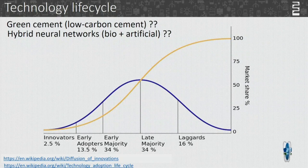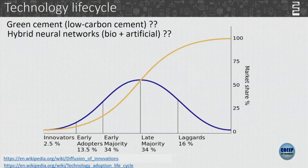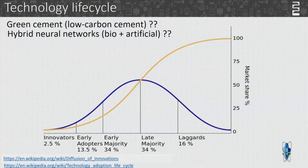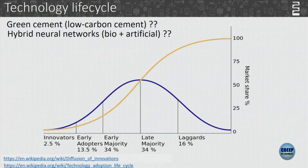Green cement is a low-carbon cement that uses more recycled material. It reduces the amount of carbon dioxide emitted in the process of manufacturing cement. Where do you think green cement lies in the four or five stages — innovators, early adopters, early majority, late majority?